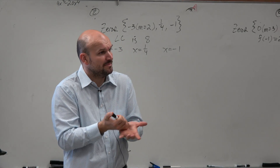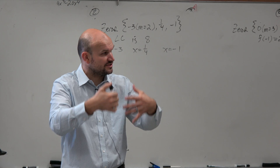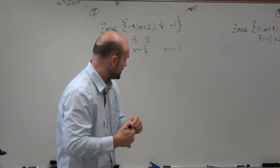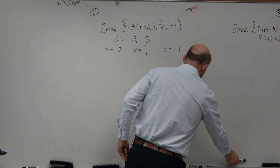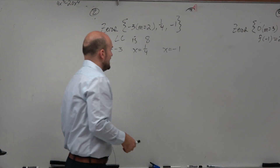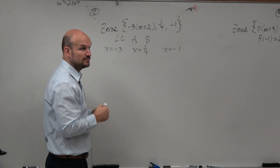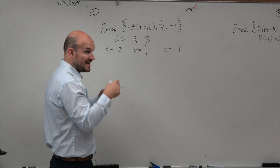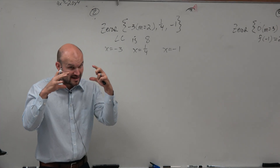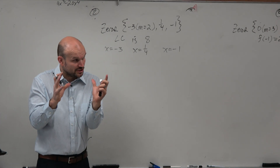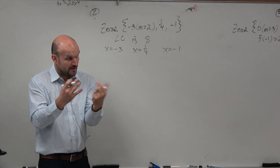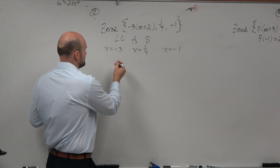Well, we got them because we took factors and set them equal to 0. So we can take each one of these zeros, or each of these values, and set them equal to 0. That's going to provide us what the factors are that we're going to want to multiply.